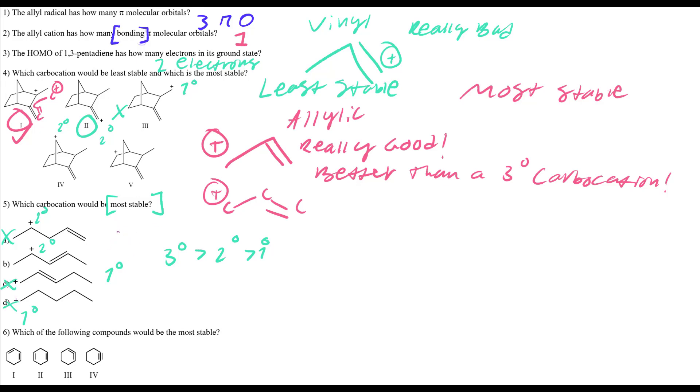Option D is just a primary carbocation without a double bond — wrong. Since secondary beats primary, B is the correct answer choice.